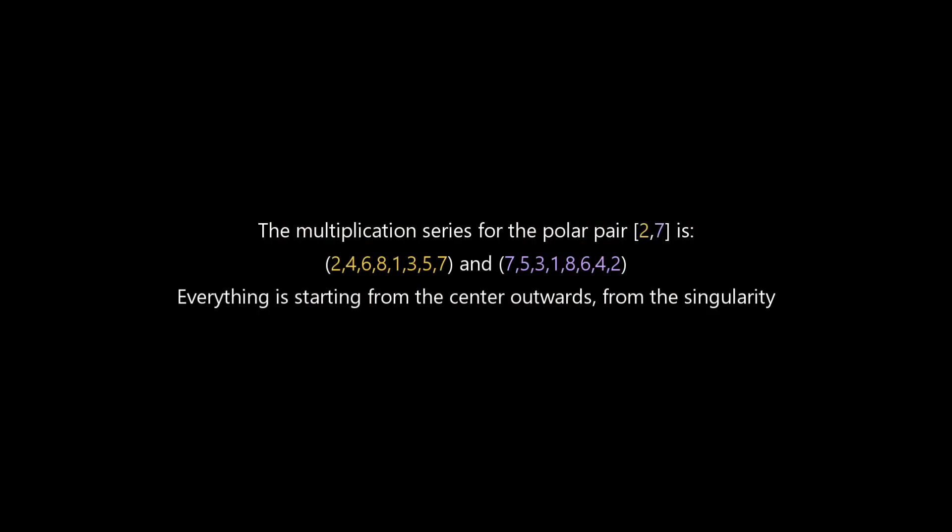The multiplication series for the polar pair 2 and 7 is 2, 4, 6, 8, 1, 3, 5, 7 and 7, 5, 3, 1, 8, 6, 4, 2.